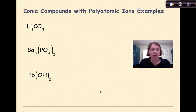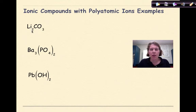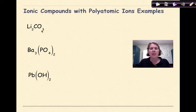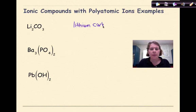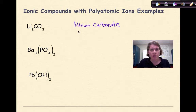For Li2CO3: lithium is a group 1 metal, so its charge is plus 1 — no Roman numeral needed since lithium only has one possible charge. CO3 is carbonate, found on table E. The name is simply lithium carbonate. No Roman numeral is needed because lithium only has one valence electron and therefore only a plus 1 charge.